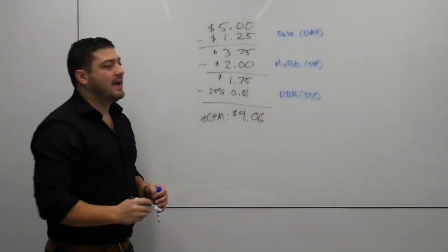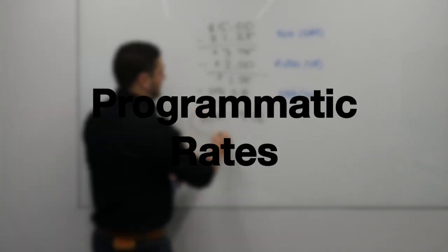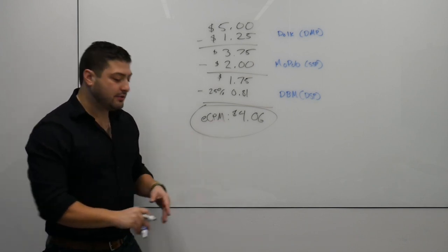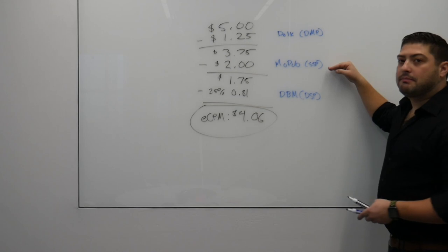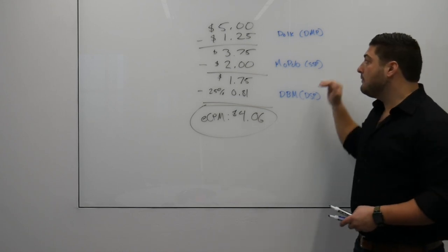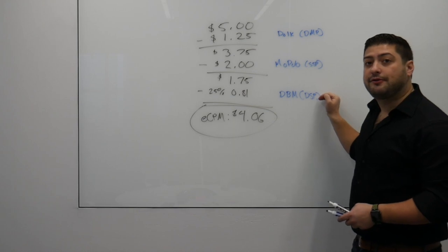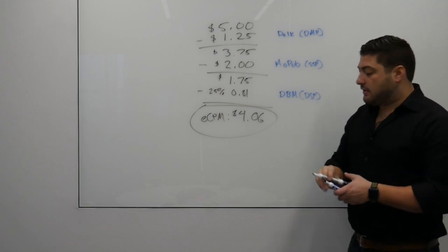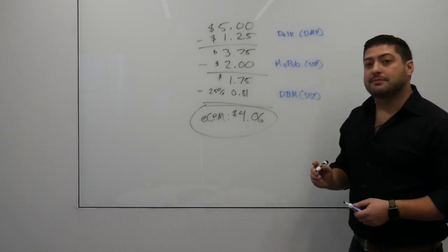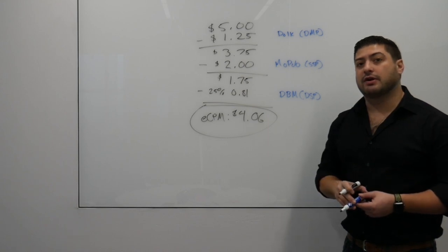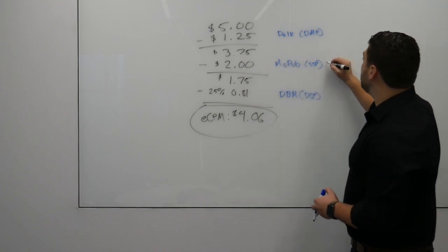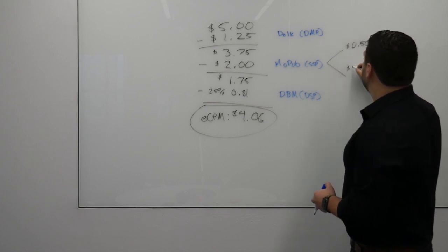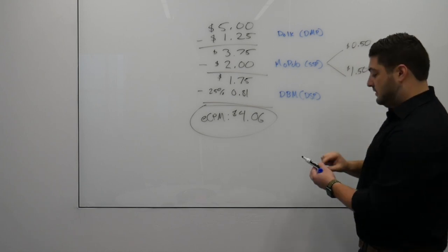It's $4.06 out of the original $5 bid. But there's a little bit more to this over here — Mopub and our inventory. Mopub, similar to DBM, is going to charge a fee. That fee goes to the publishers — the fee they charge to publishers to work with them. So if Mopub is charging a 25% fee, which is very much in range with what they may charge: of that $2, $0.50 is going to go to Mopub and $1.50 to the publisher.